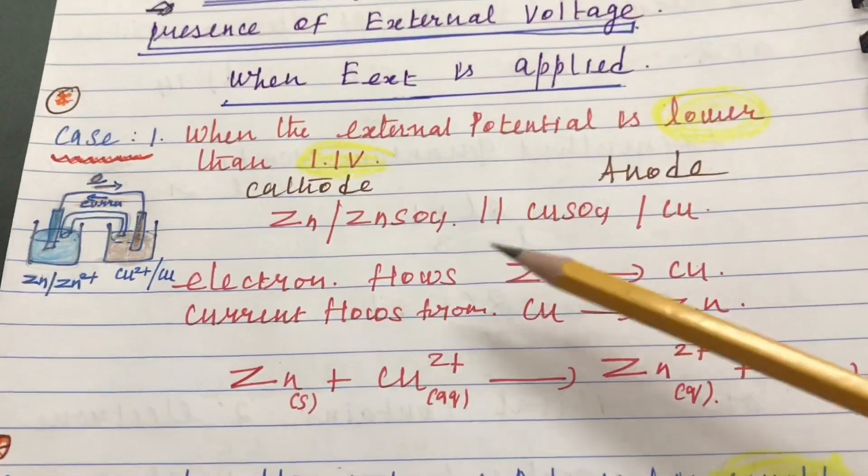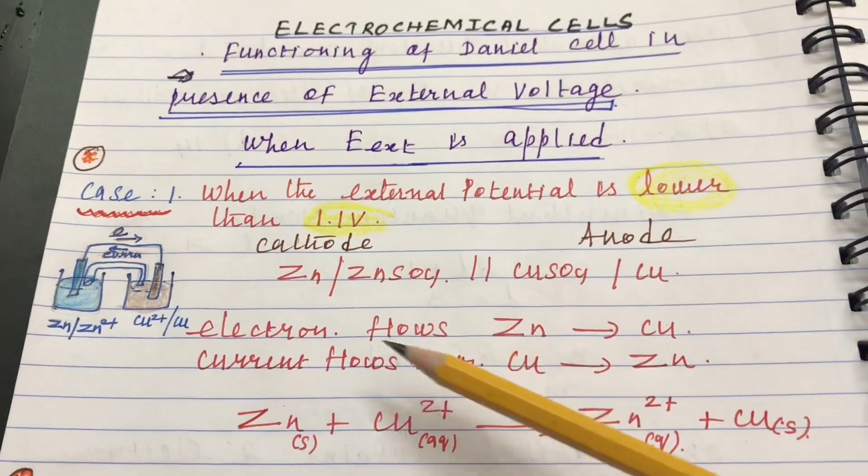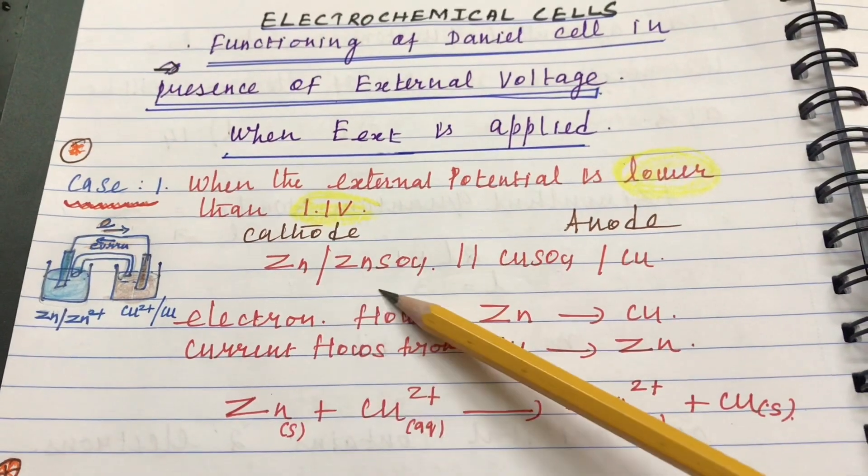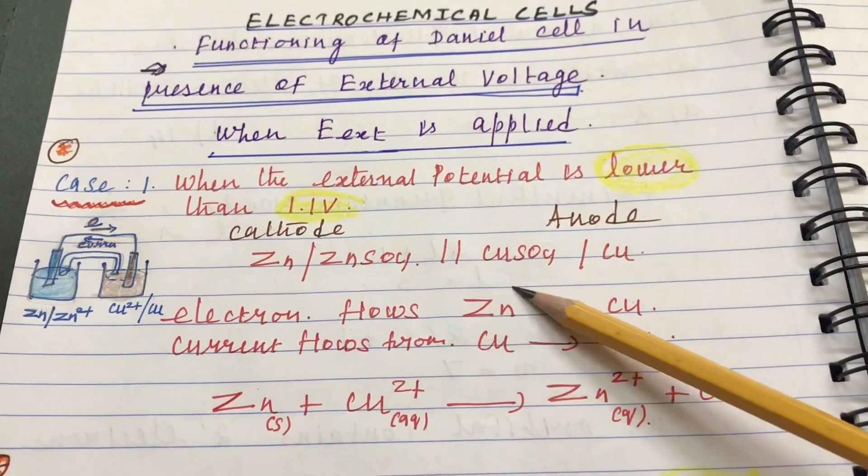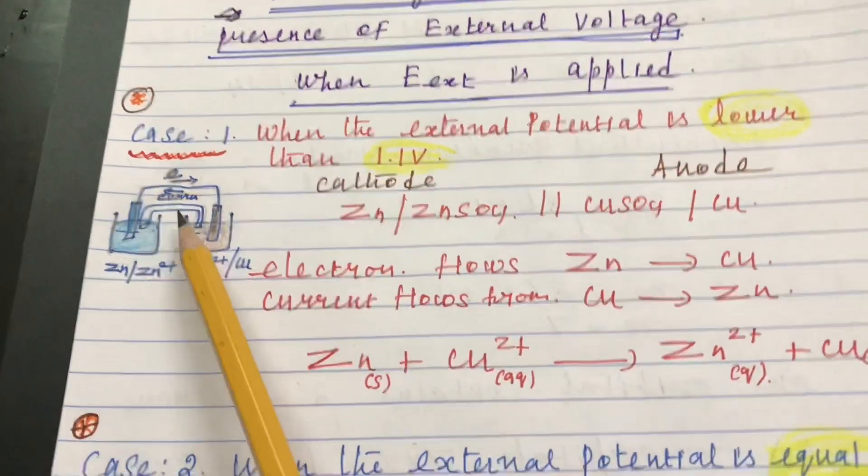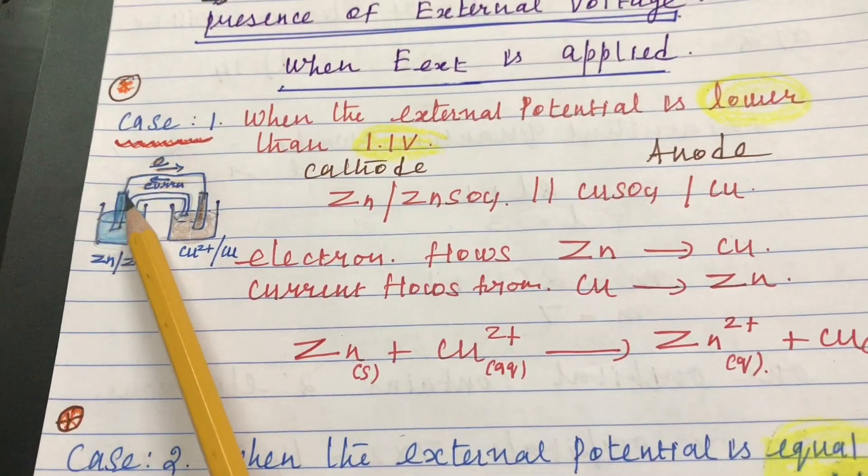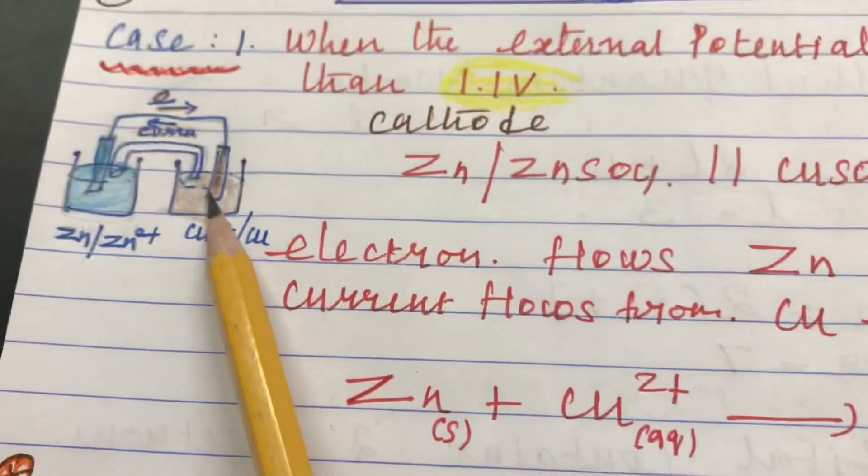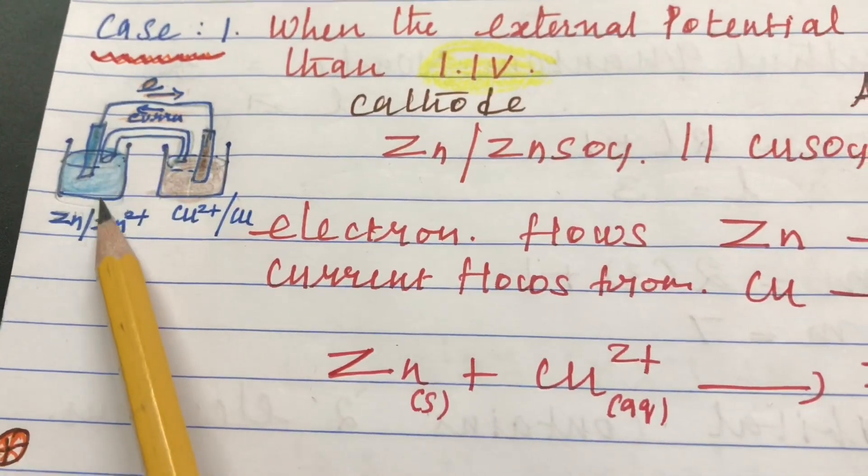the same reaction takes place as usual where zinc oxidizes to zinc 2+ ion taken up by the copper 2+ ion reduced to copper. Thereby, electron flows from zinc to copper and current flows from copper to zinc.